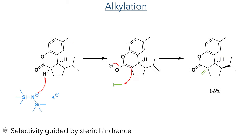This alpha position was then alkylated. This formed an enolate that attacked methyl iodide to form the product in an 86% yield as a single isomer. The selectivity of this reaction was guided by steric hindrance, with the methyl group adding to the same face of the molecule as the hydrogen atom.